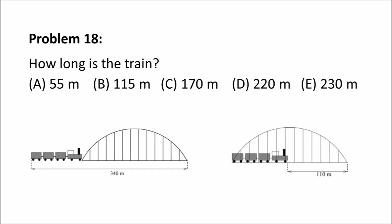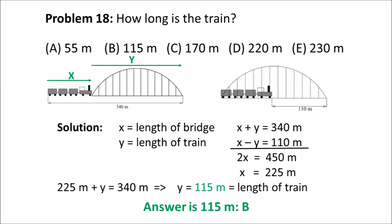Problem 18 reads, how long is the train? 55 meters A, B 115 meters, C 170, D 220, and E 230.